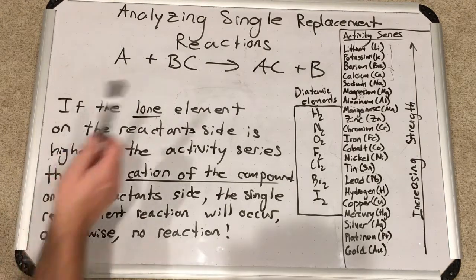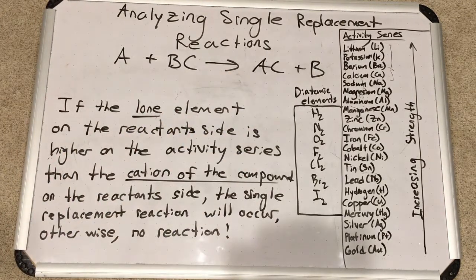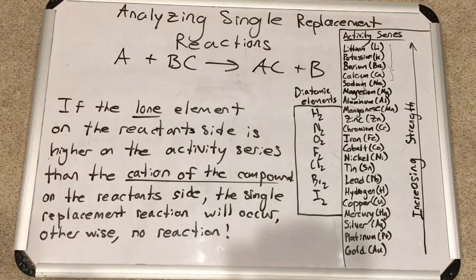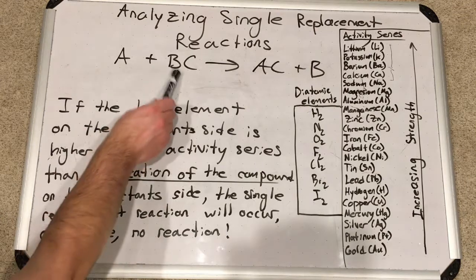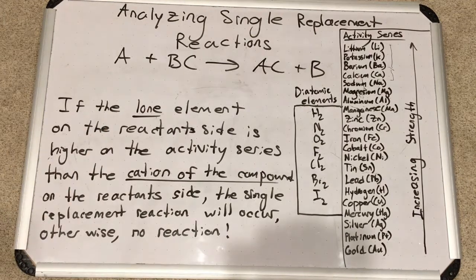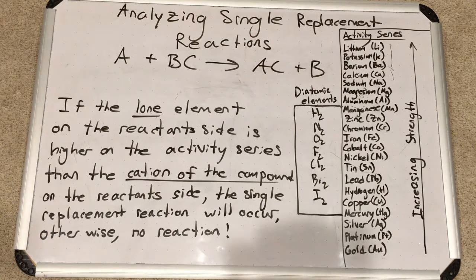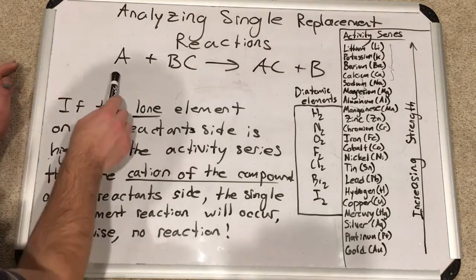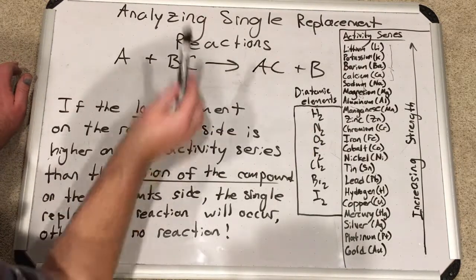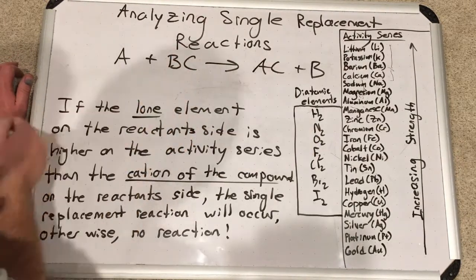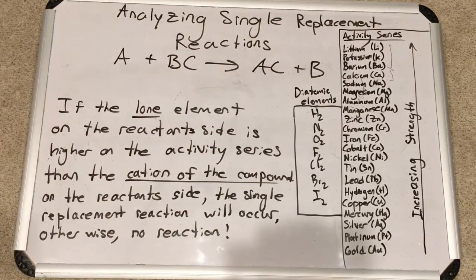So here, this statement: if the lone element on the reactant side is higher on the activity series than the cation of the compound on the reactant side, the single replacement reaction will occur. Otherwise, no reaction. So if A happens to be lower on the activity series than B, there will be no reaction. But if A is higher on the activity series than B, then the reaction will occur. A will knock B out.